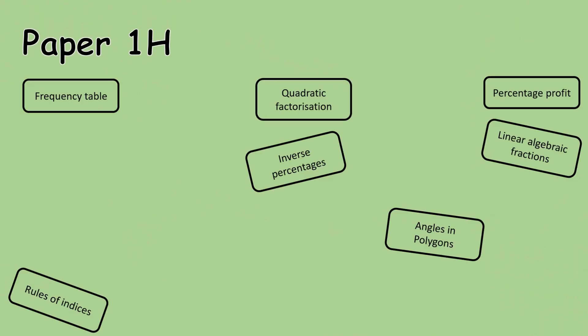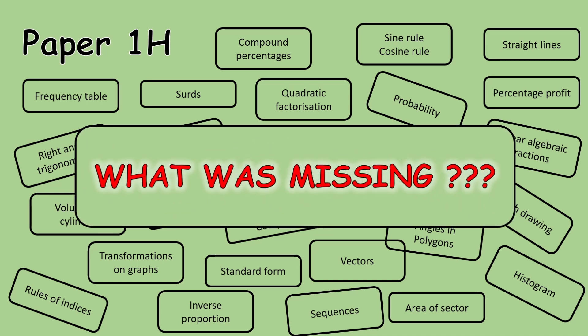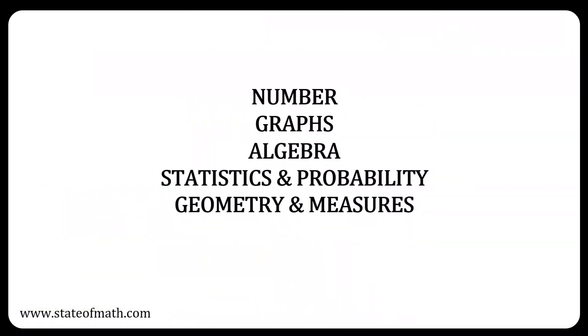Paper 1H is over and included the following topics, but you already knew that. The crucial question is what was missing. In this video we'll go over the main topics that did not appear in Paper 1H together with sample questions from each topic. You can find these questions together with a collection of questions by topic on our website. You can find the link to the website in the description of the video below. I've divided the topics into five main areas: numbers, graphs, algebra, statistics and probability, and geometry and measures.